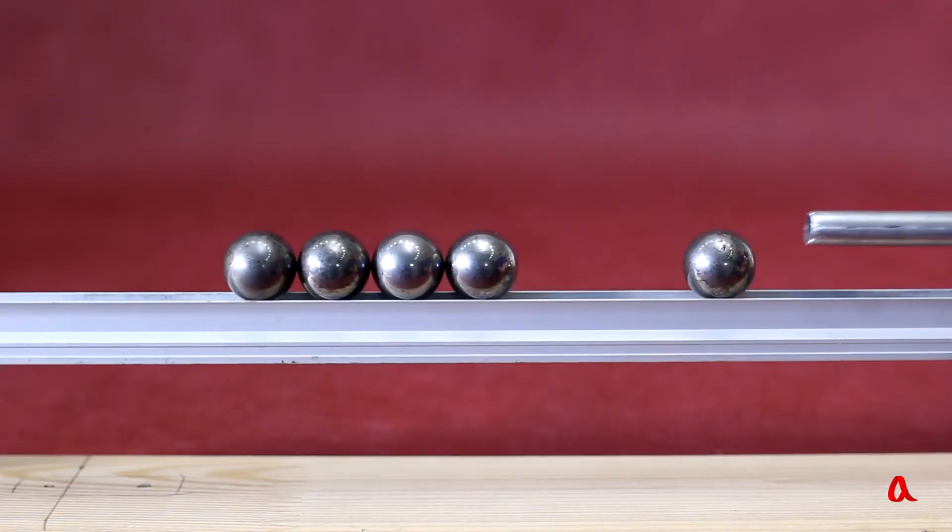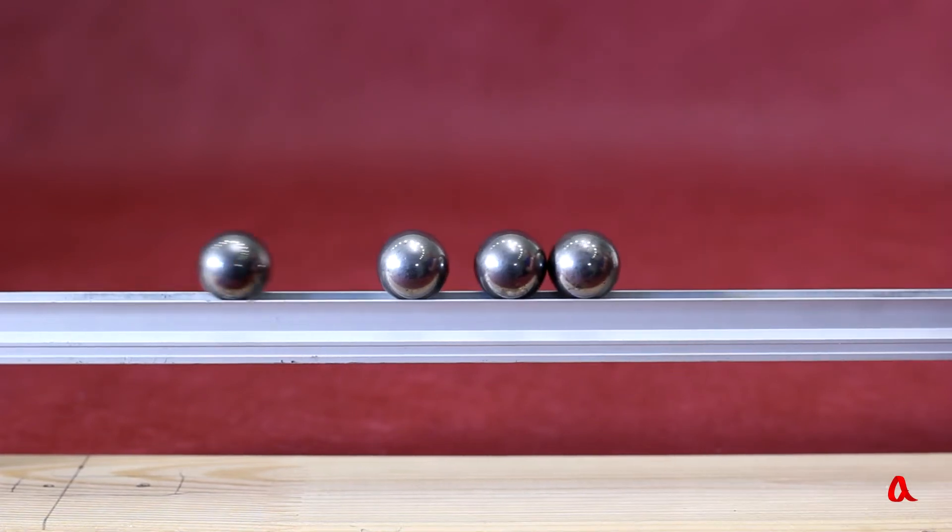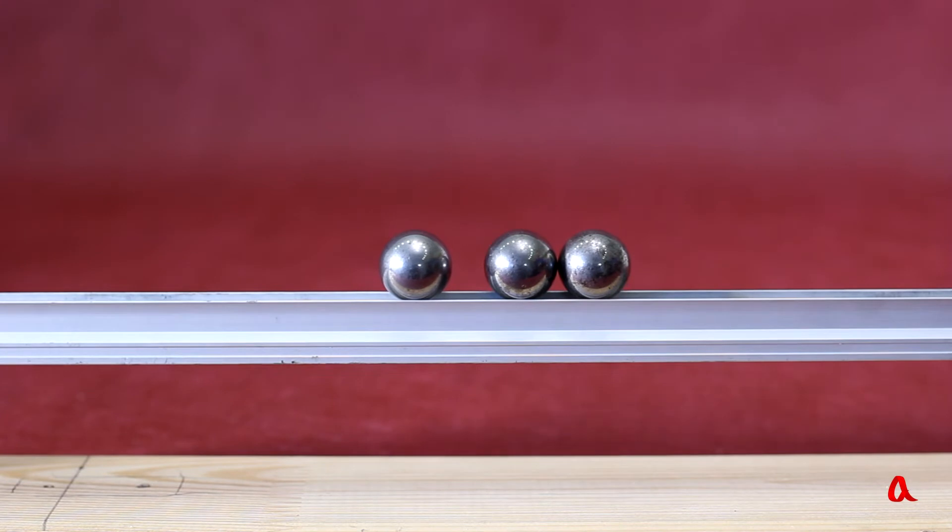Let us now put several identical balls in a row. If one more ball strikes this chain, only the uttermost ball will bounce off. The next one may move slowly and the rest of the balls don't move at all.